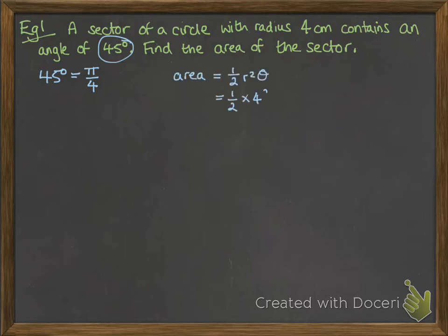So the area is equal to half r² theta. Make sure you write your formulas, not just go straight into substituting the numbers in. You will get marks awarded for correct use of formulae. That'll be half times 4² times π by 4, and that comes to 2π centimeters squared.